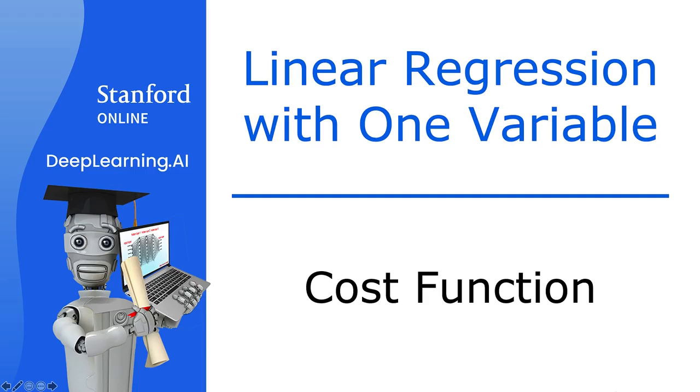In order to implement linear regression, the first key step is for us to define something called a cost function. This is something we'll build in this video, and the cost function will tell us how well the model is doing so that we can try to get it to do better. Let's look at what this means.